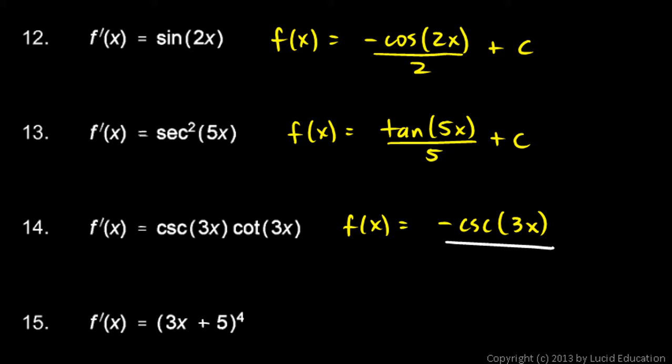And try this, if we take the derivative of that, we get a positive cosecant 3x cotangent 3x times 3 by the chain rule. So, that means we need to divide this by 3, and that will cancel out that factor of 3 that appears by the chain rule. And then, of course, we need plus c.